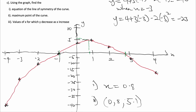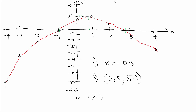Part c(iii): Find the values of x for which y decreases as x increases. Y increases up to the maximum point, then starts decreasing from there onward. So the values of x for which y decreases are 0.8 less than or equal to x, up to 4. This brings us to the end of question 7. In our next video, we'll be solving question 8 of the 2021 WASI June Core Mastery questions.